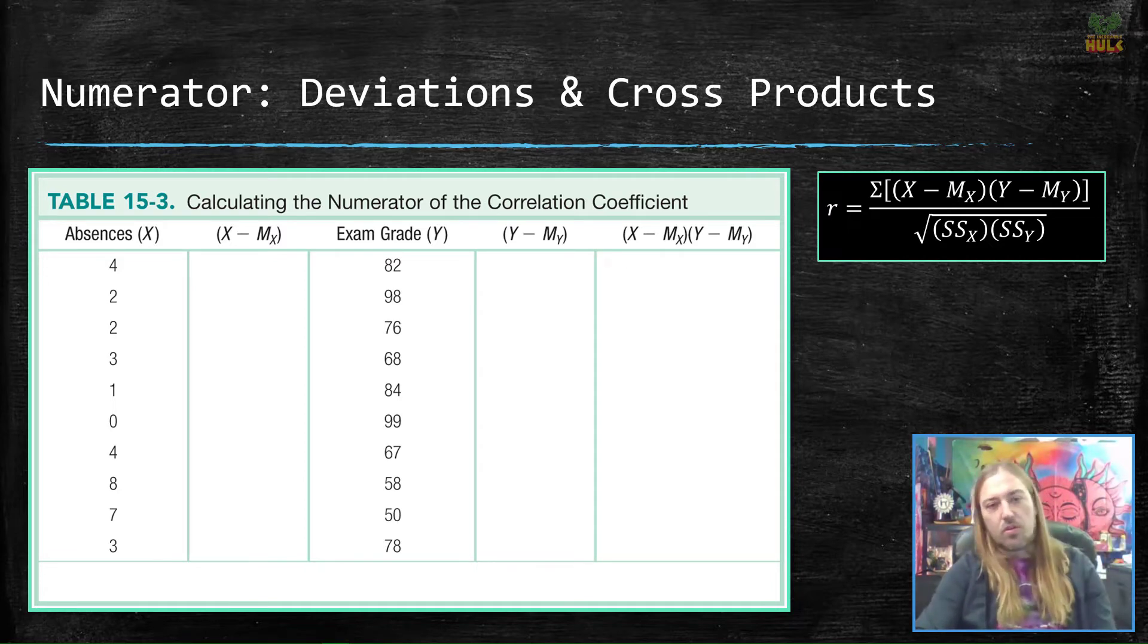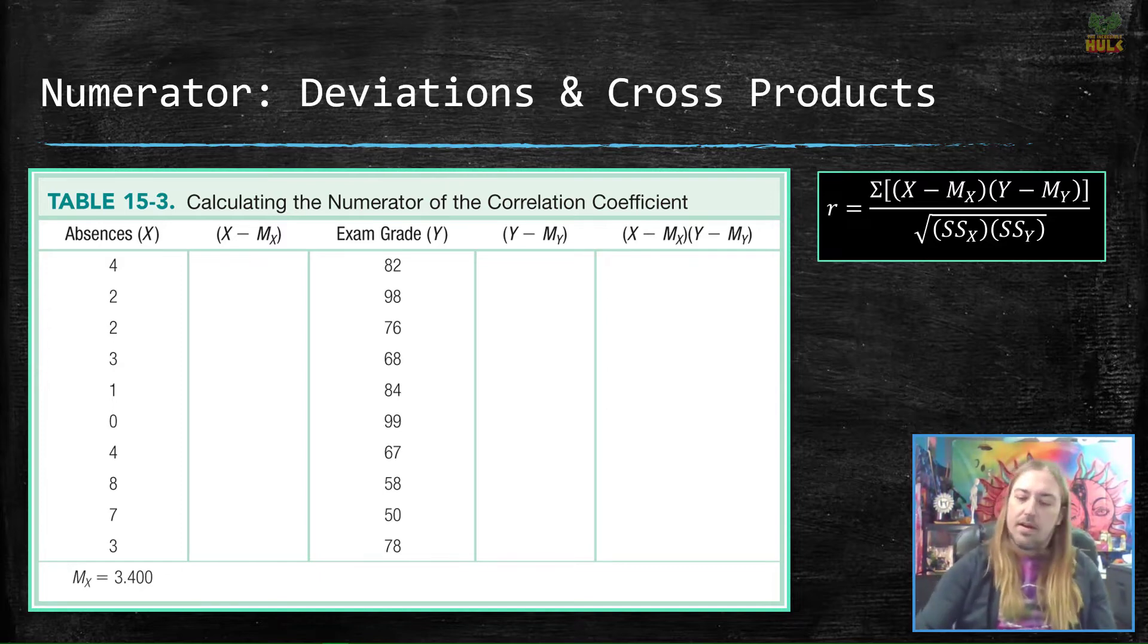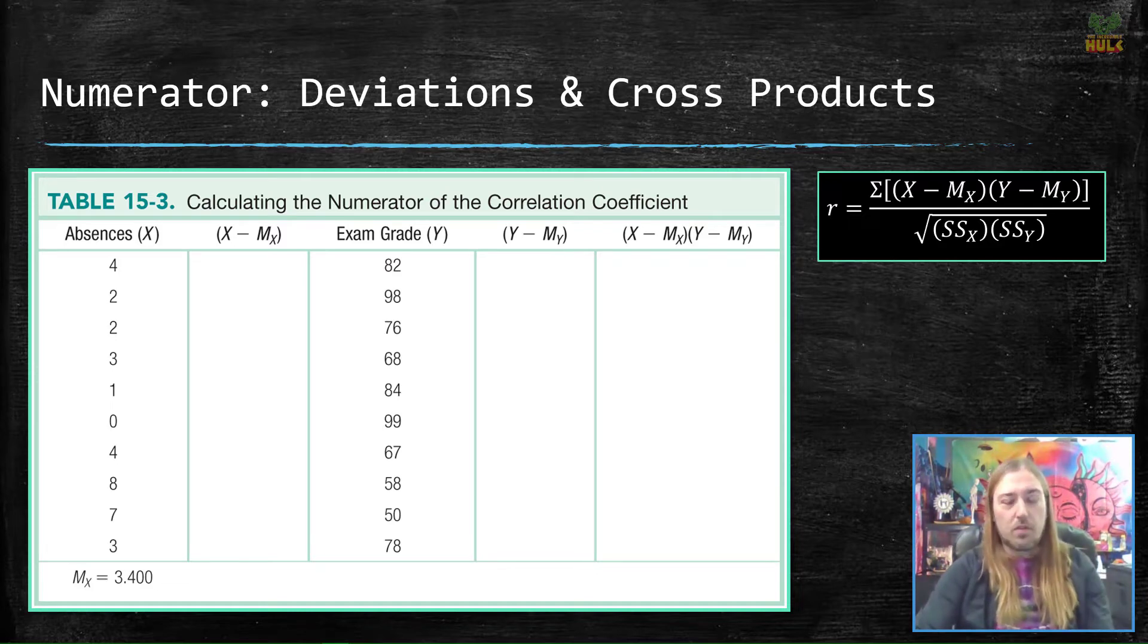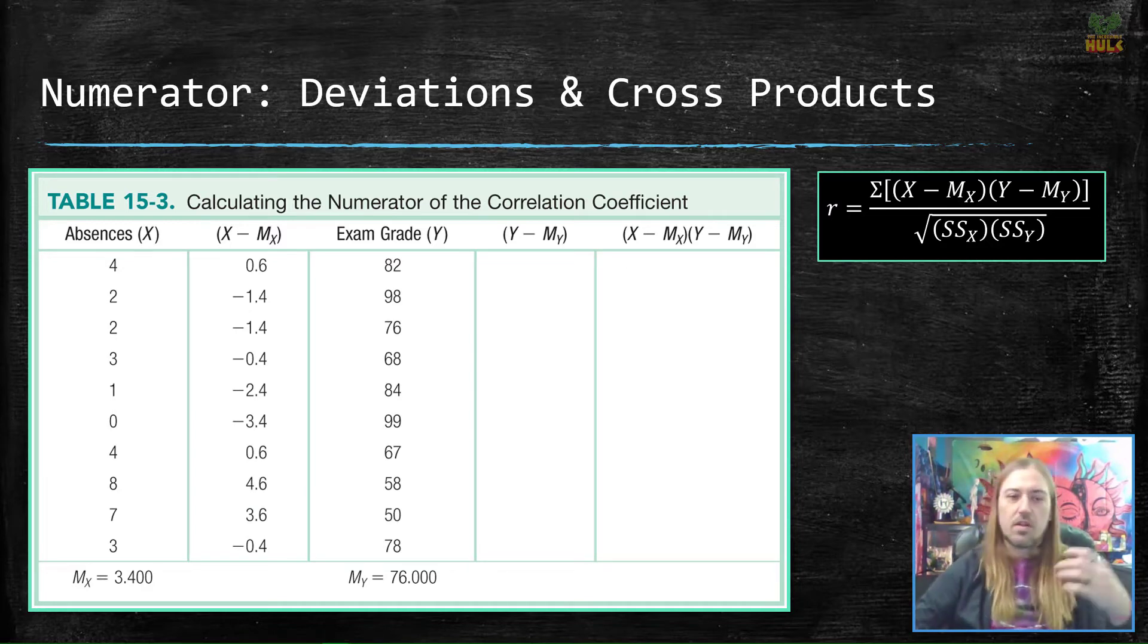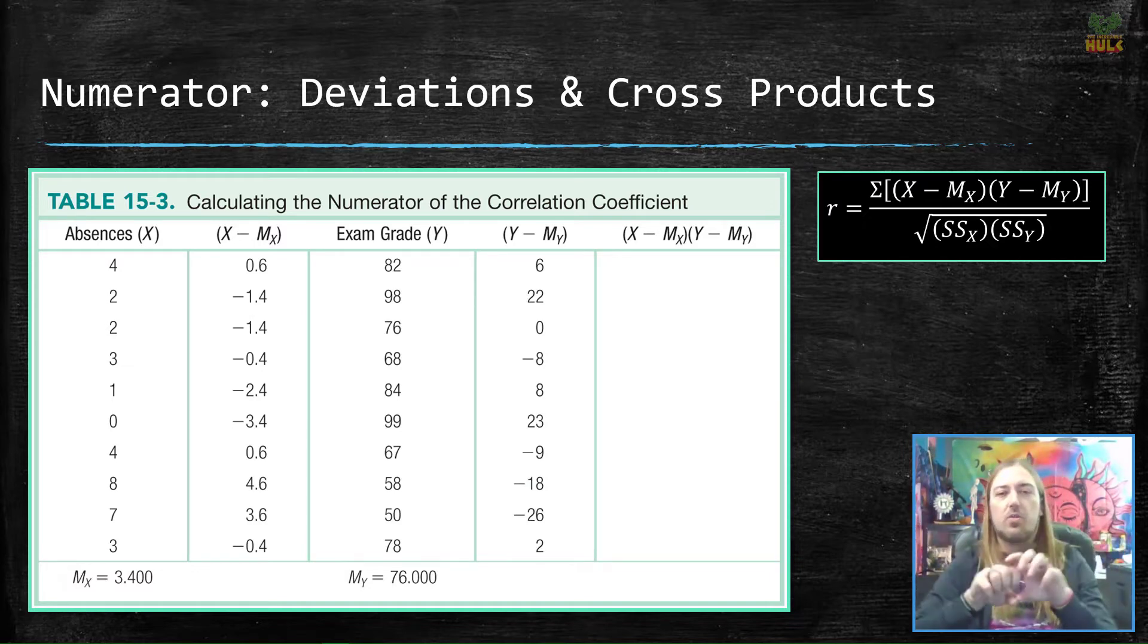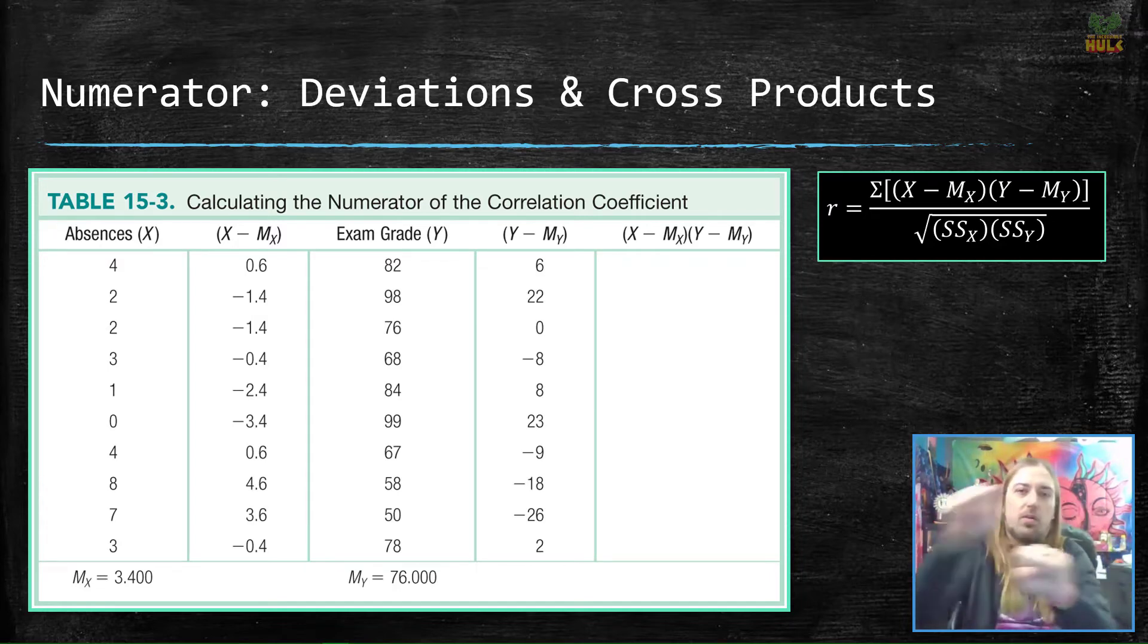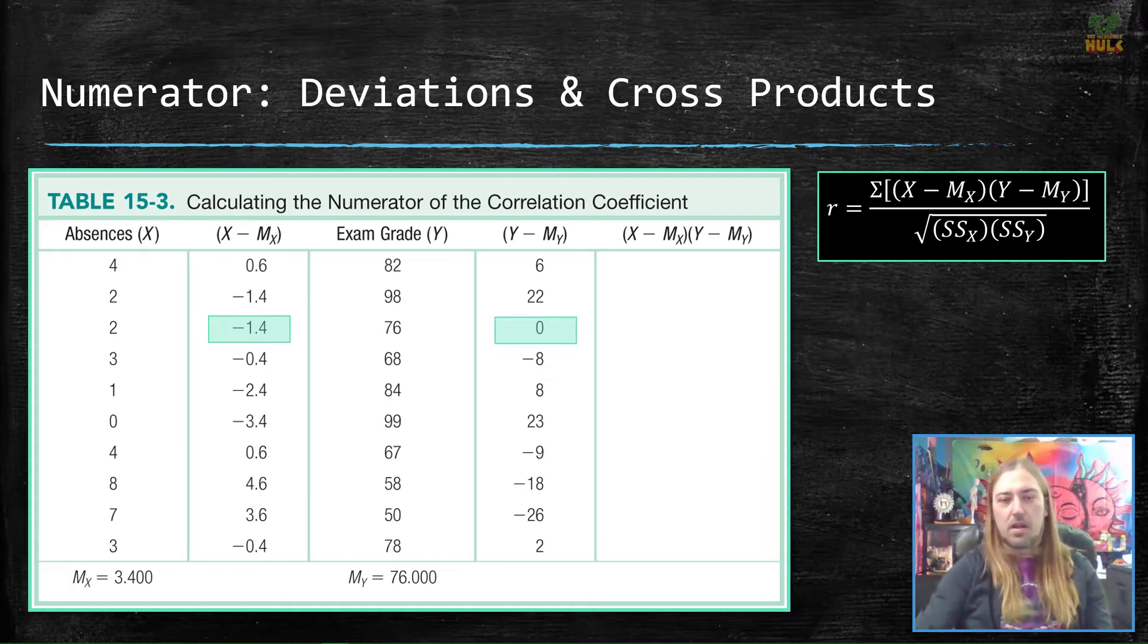So first, let's figure out the absences. Add all of those together, divide by 10 because there's 10 individuals in the class here, we would get a mean of 3.400. Now let's subtract 3.4 from all of those absences. Let's quickly get the exam grade average, 76. Now let's subtract 3.4 from all of those x's, all of those absences. We get all of these values now. 4 minus 3.4 is 0.6, 3 minus 3.4 is negative 0.4. Let's do the same thing for y now, subtract 76 from all of those exam grades. We now have these sort of deviations, if you will, the degree to which that score deviates or is different from the mean and in which direction. Now, because the numerator requires it of us, let's multiply these two columns together and we get this last sort of cross product column.